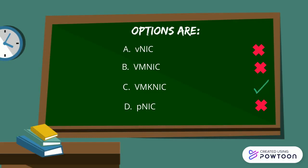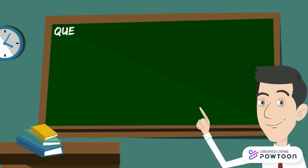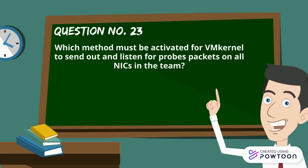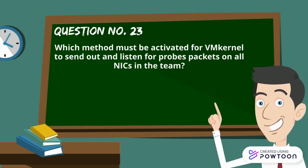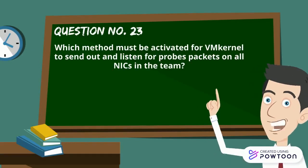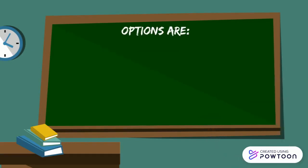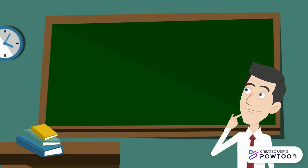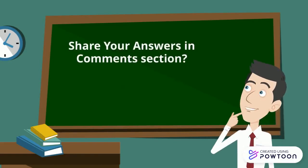So vmknic is the right answer. Now here is question number 23: which method must be activated for the VMkernel to send out and listen for probe packets on all the NICs in the team? Your options are: A) Link Status Only, B) Failover, C) Enhanced LACP, and D) Beaconing.